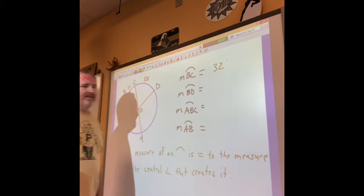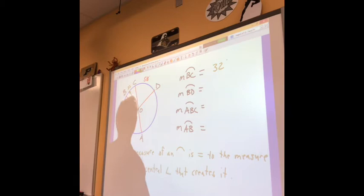So if that angle is 32 degrees and it's a central angle, that means that this arc is 32 degrees. All right, so the measure of arc BC would just be 32 degrees. Any questions on that?